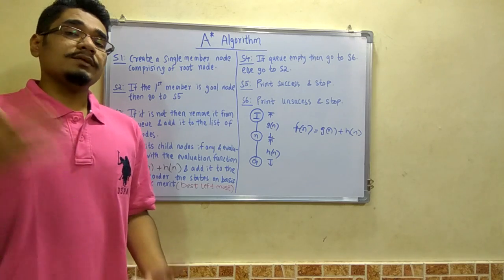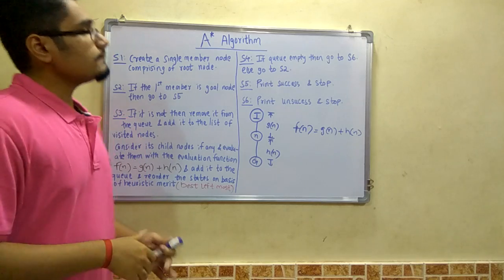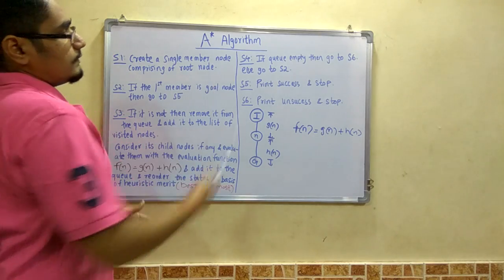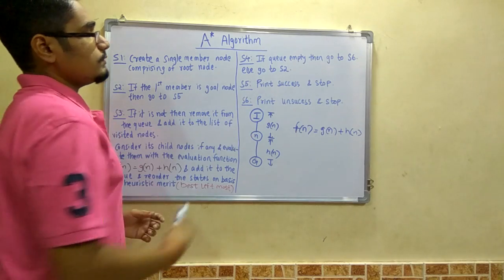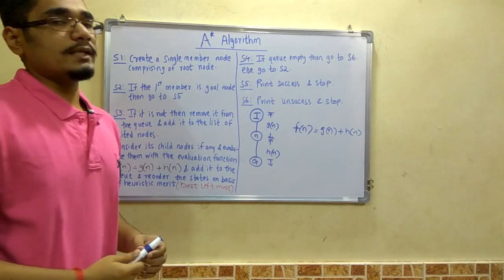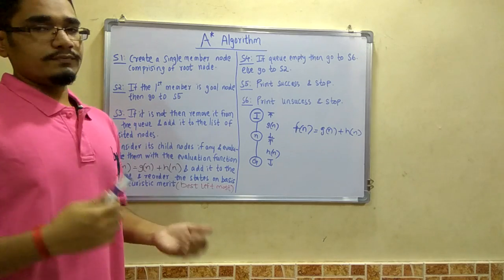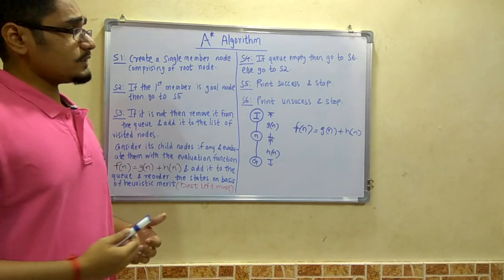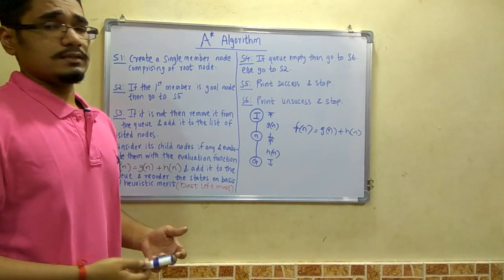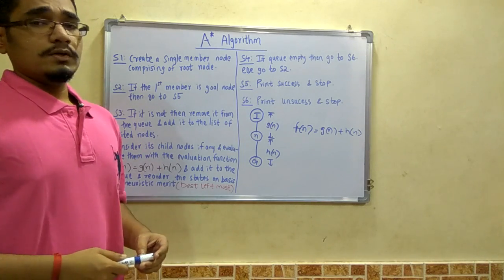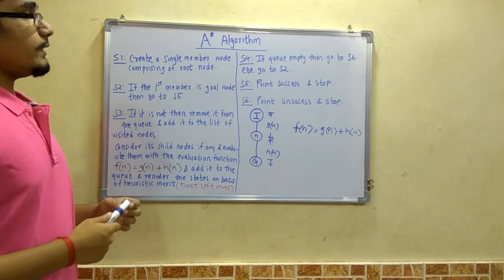Moving to step 4, if the queue is found to be empty, go to step 6 and print unsuccessful and stop. This means we are unsuccessful in finding the goal node and stop the A star algorithm process. Step 5 says print success and stop, and step 6 is print unsuccessful and stop. This is how the A star algorithm is evaluated.